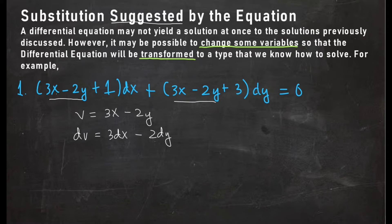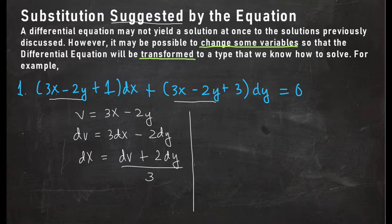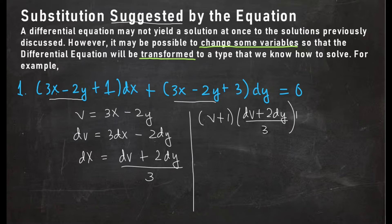We want to substitute for dx, so dx = (dv + 2dy) / 3. Applying the substitution to our problem, 3x - 2y becomes v, so we have (v + 1)(dv + 2dy)/3 plus (v + 3)dy = 0.